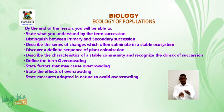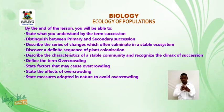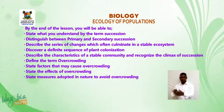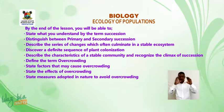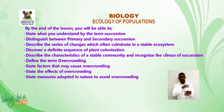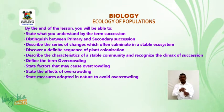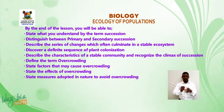You will describe the series of changes which often culminate in a stable ecosystem, discover a definite sequence of plant colonization, describe the characteristics of a stable community, and recognize the climax of succession. You will also define the term overcrowding, state factors that may cause overcrowding, state the effects of overcrowding, and state measures adopted in nature to avoid overcrowding.